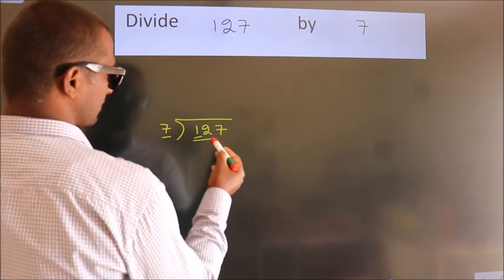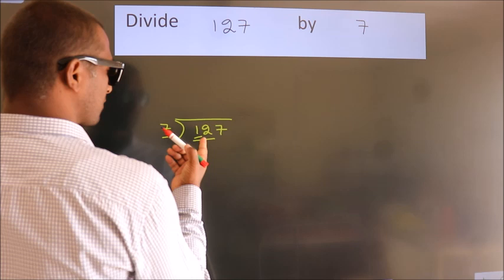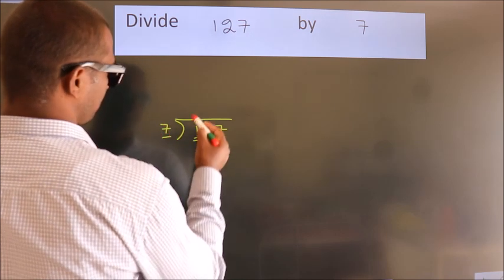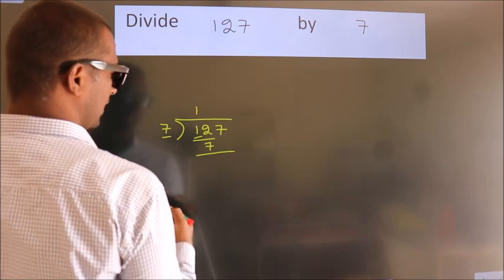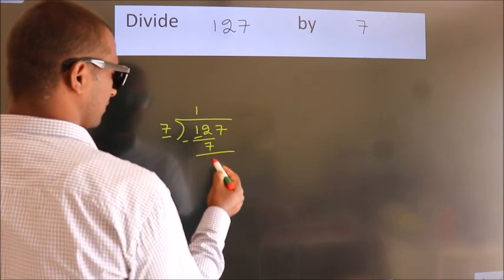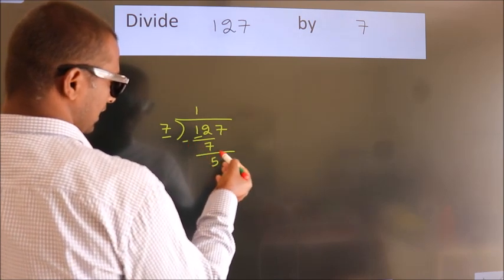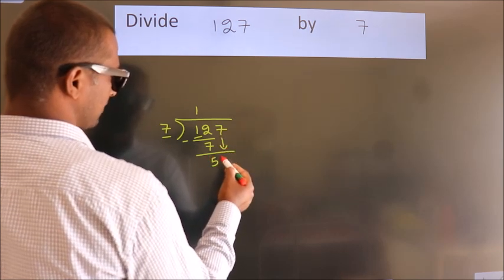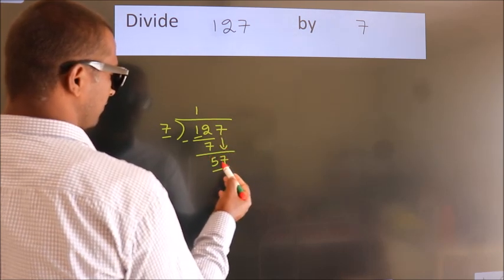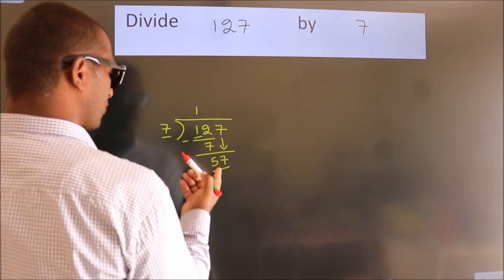12. A number close to 12 in the 7 table is 7 times 1 equals 7. Now we should subtract. We get 5. After this, bring down the next number, so 7 down. So 57. A number close to 57 in the 7 table is...